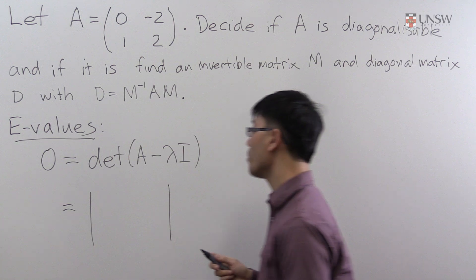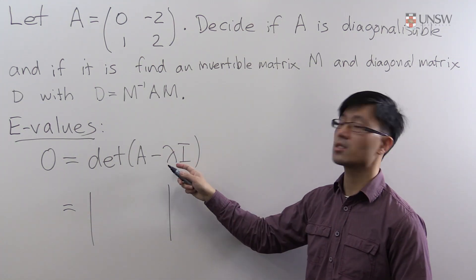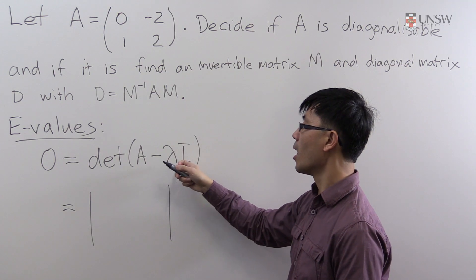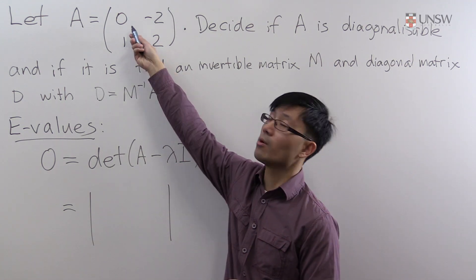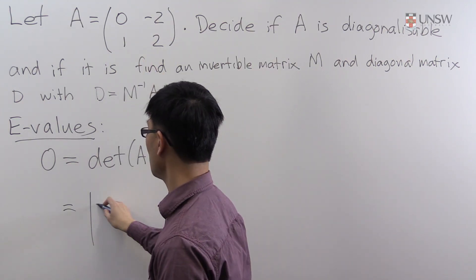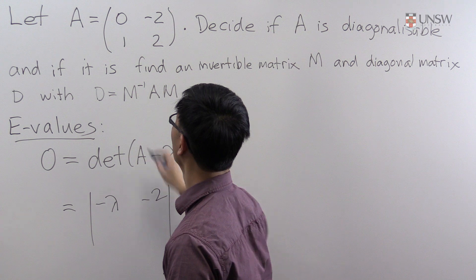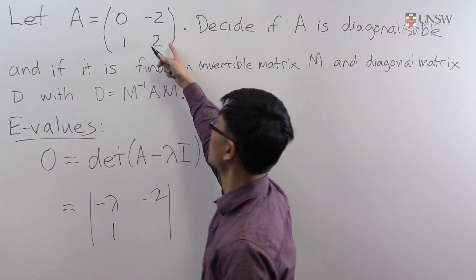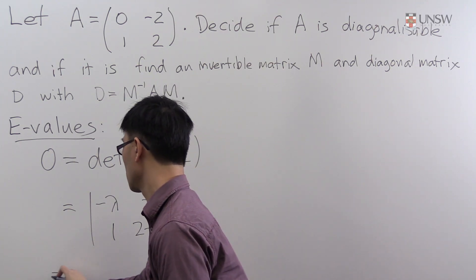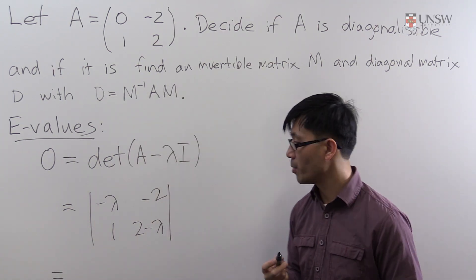So we solve 0 equals the determinant of A minus lambda I. So it's the determinant of a 2 by 2 matrix which has this parameter lambda in it. Remember subtracting lambda I means that you subtract lambda from the diagonals. So you have minus lambda here, minus 2 here, 1 and you subtract 2 lambda from here.